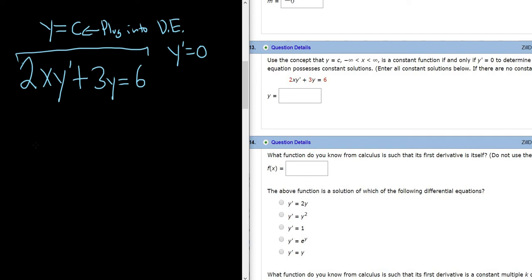So we get 2x times y' is 0. I love this problem because it sounds really complicated, but all you have to do is plug in y equals c and you can work through it. And then 3c,